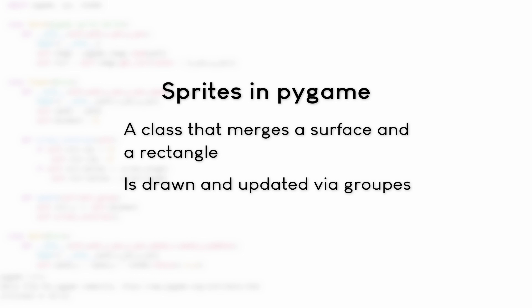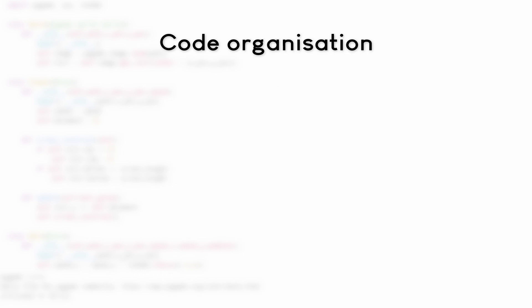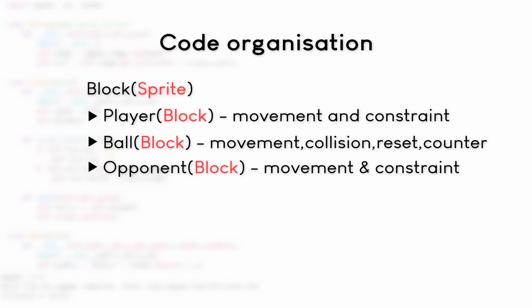I'm going to use five different classes, so it is getting a little bit more complex. The most basic class is a block class, and this one is not going to be drawn on the screen. However, the three main classes — the player paddle, the ball, and the opponent paddle — are going to inherit from that class. So the block class is basically just there to save some writing.